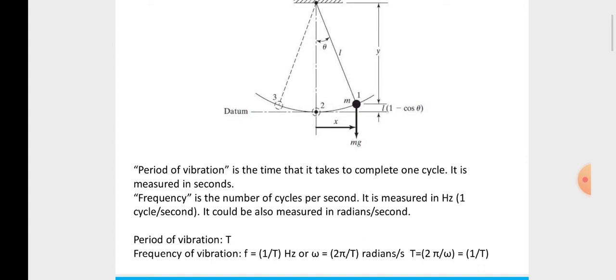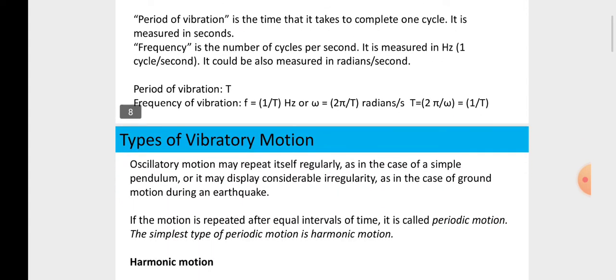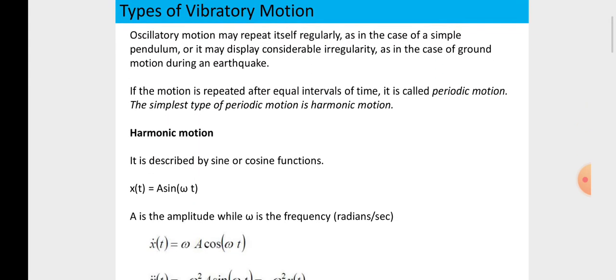So, omega is equal to 2 pi upon t in radians per second. t is equal to 2 pi upon omega. That is the case. Now, again come to our point that is types of vibrating system.